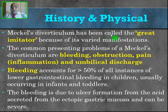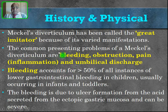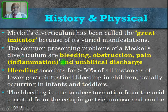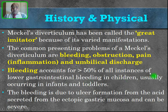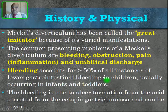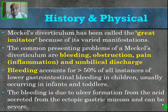Meckel's diverticulum has been called the great imitator because of its varied manifestations. The most common presenting problem is bleeding, which accounts for more than 50% of all instances of lower GI bleeding in children, usually occurring in infants and toddlers. The bleeding is due to ulcer formation from acid secreted by the ectopic gastric mucosa, and it can be very severe.